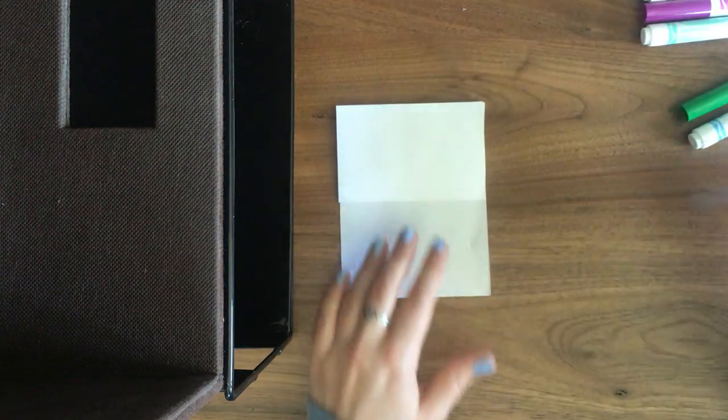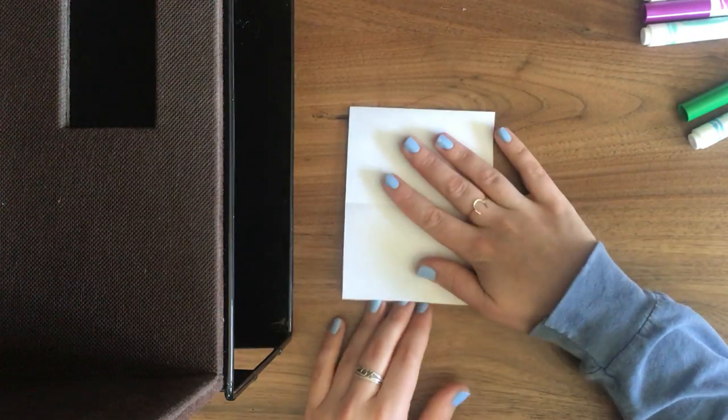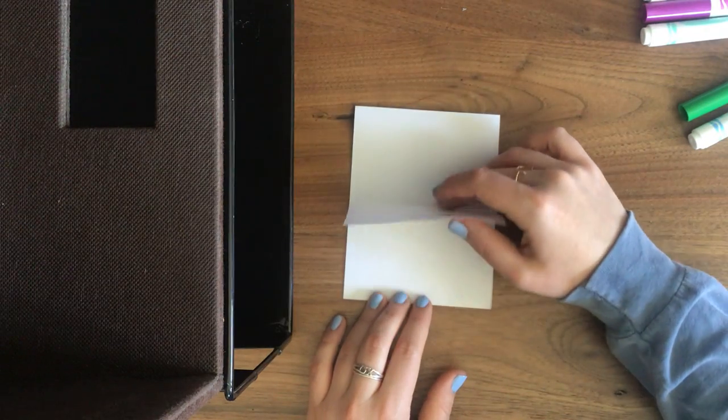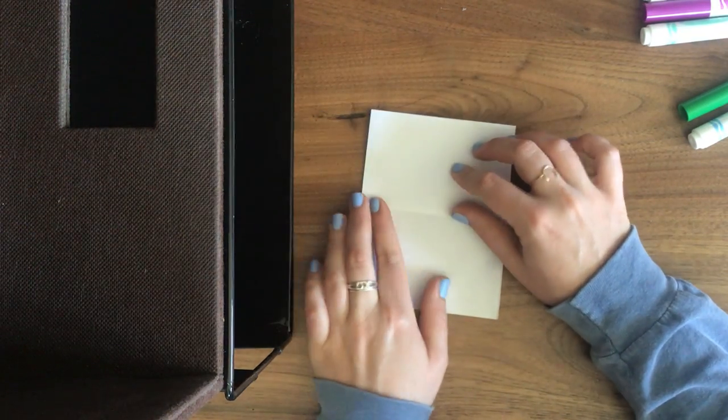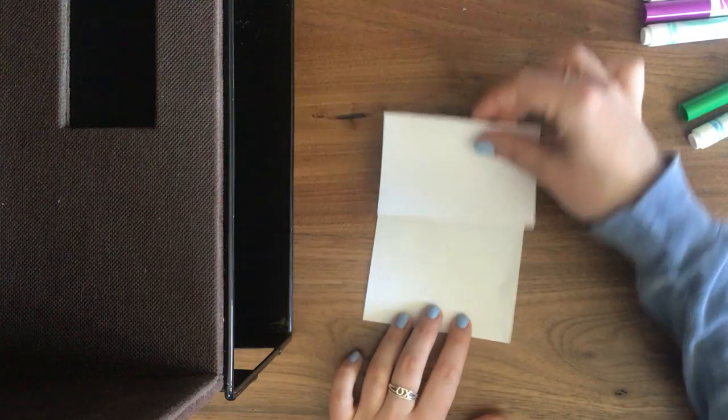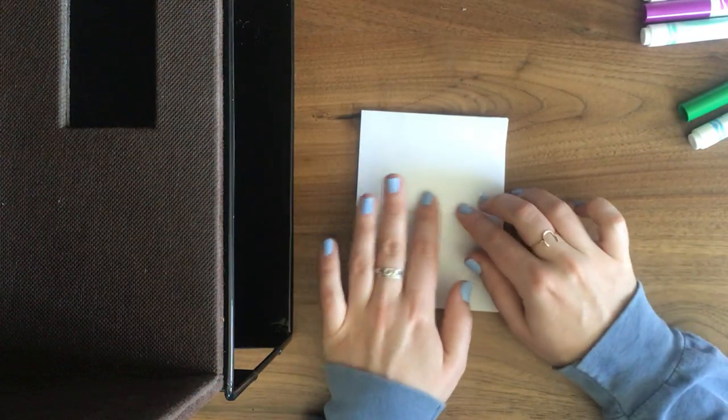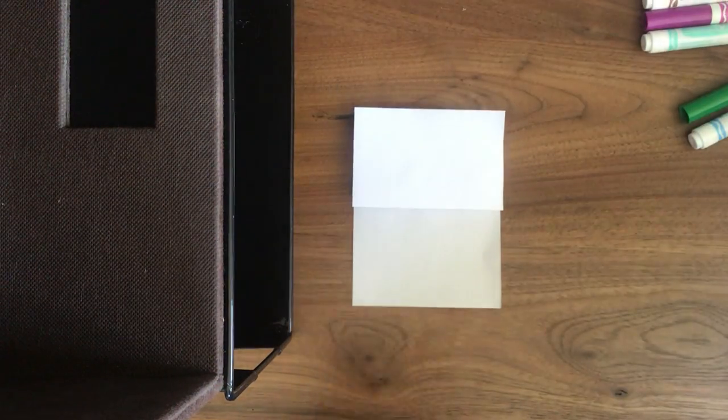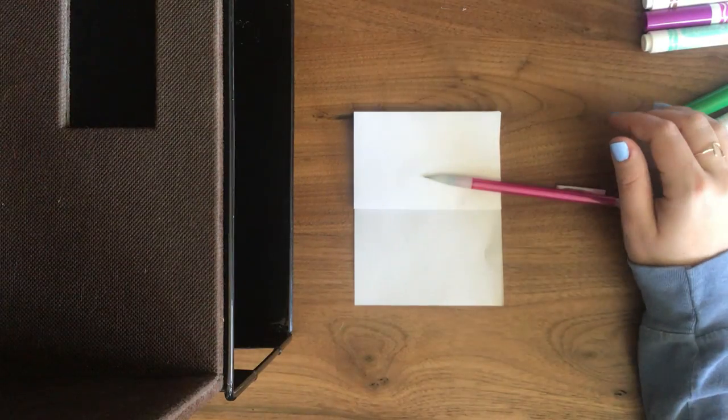So you can replay it if you need those steps again. So I folded it hamburger style and then folded that flap up to meet my fold. So now you have the start of your monster. Then you're going to take your pencil that way you can erase.